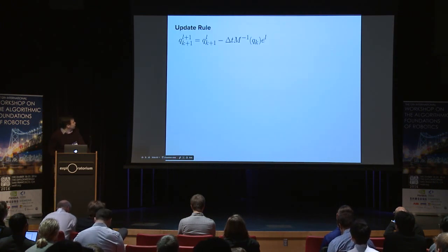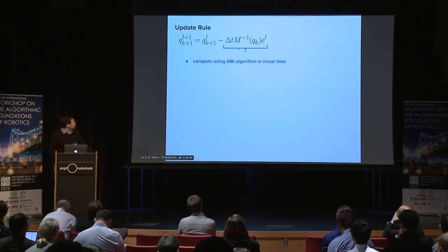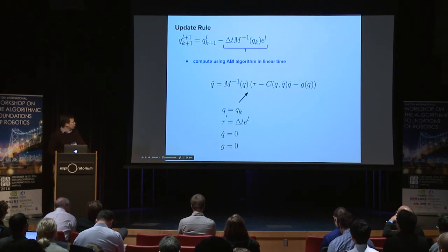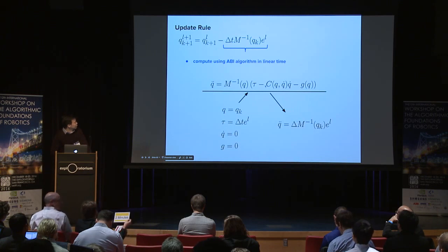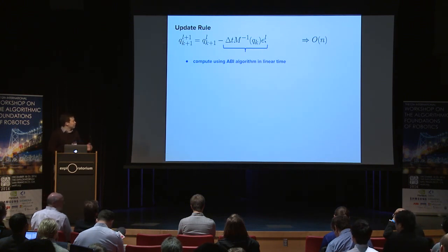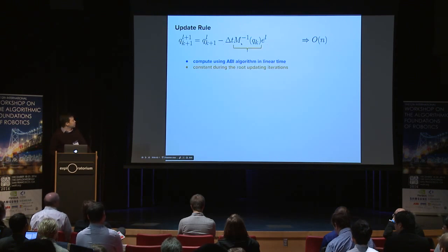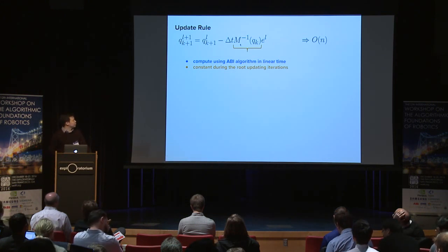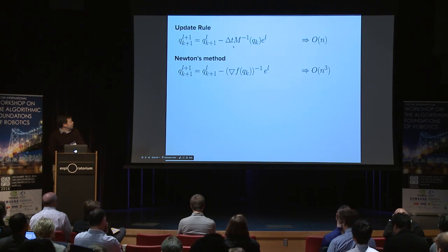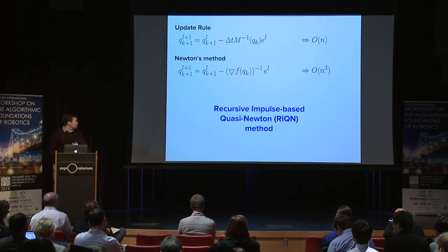Looking closely at the update rule, there is a key term that can be computed using the ABI algorithm in linear time, by setting Q equal to Q_k and tau equal to delta_T times E_L. Importantly, we do not compute the mass matrix and vectors separately — we compute them as a combined term in linear time. Furthermore, this term is constant during the update iterations, so we can reuse it, making it quite cheap. Comparing to Newton's method, the Jacobian term is replaced by the mass matrix inverse, so our method is a kind of quasi-Newton method. I named it the Recursive Inverse-based Quasi-Newton (RIQN) method.